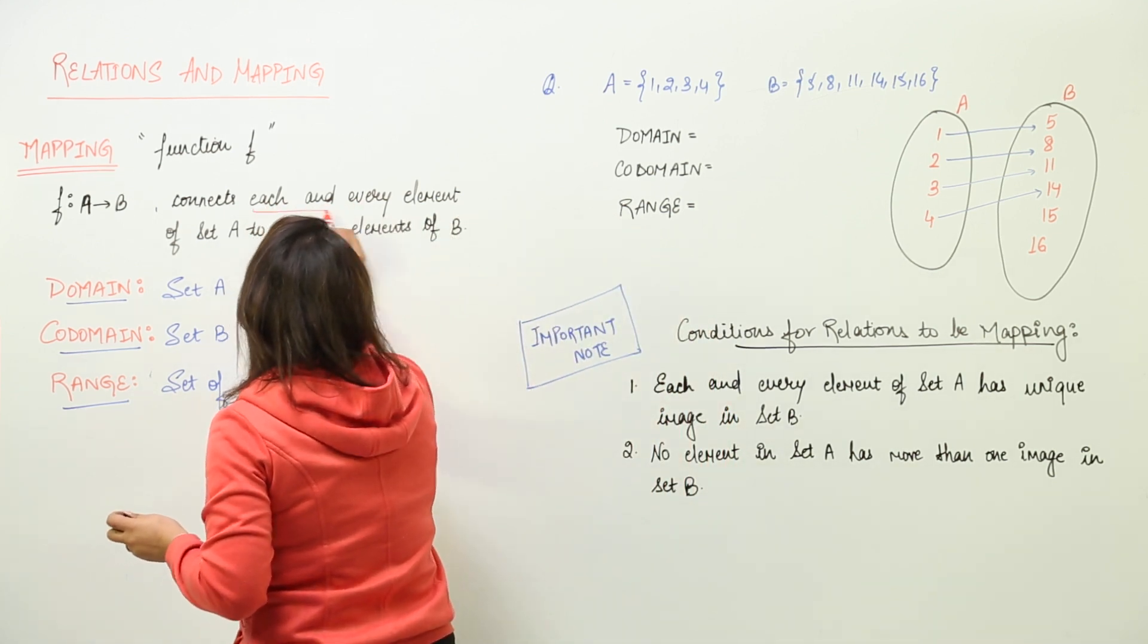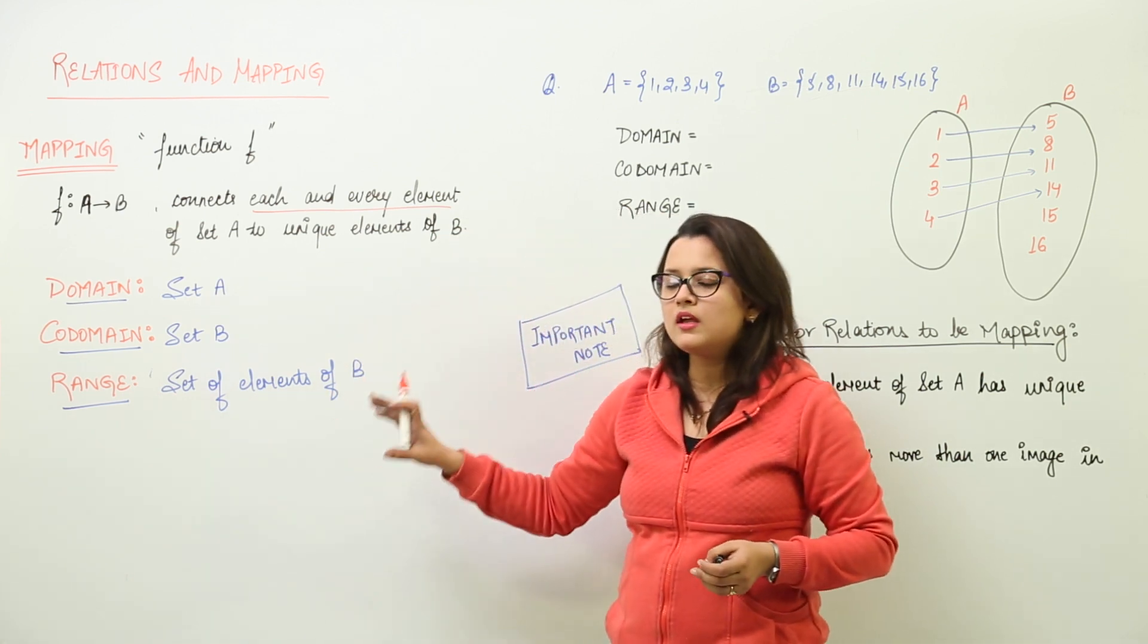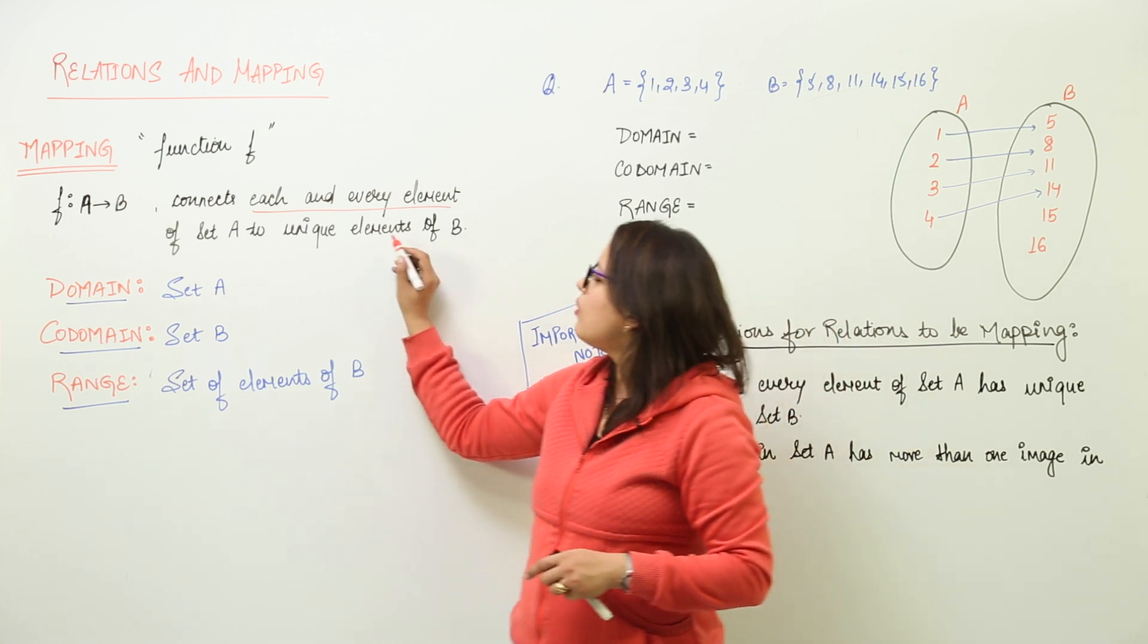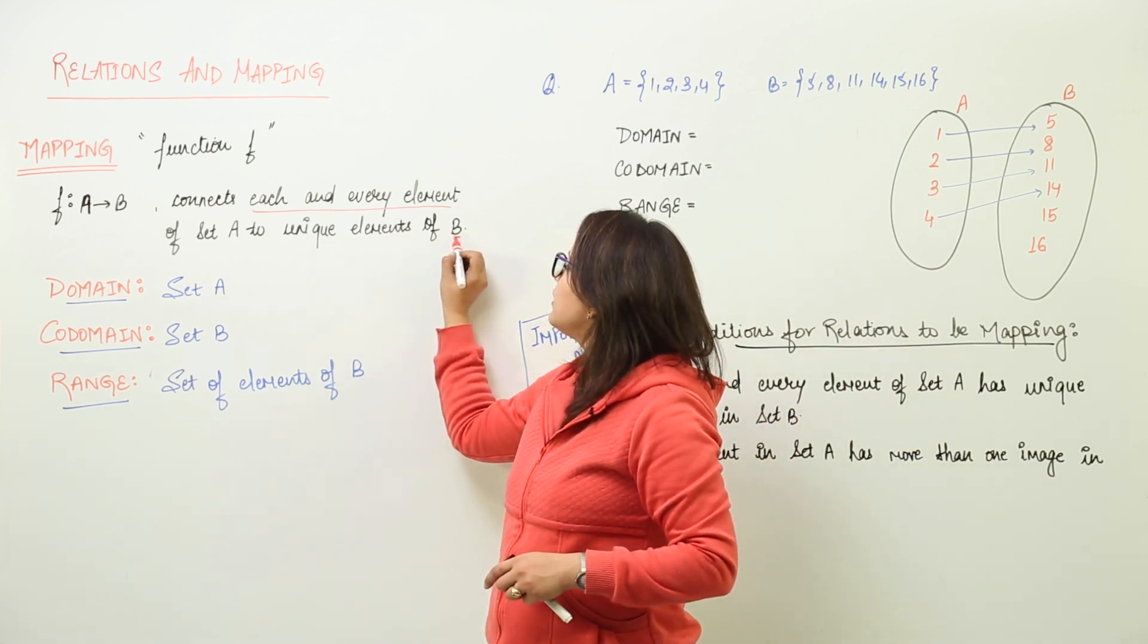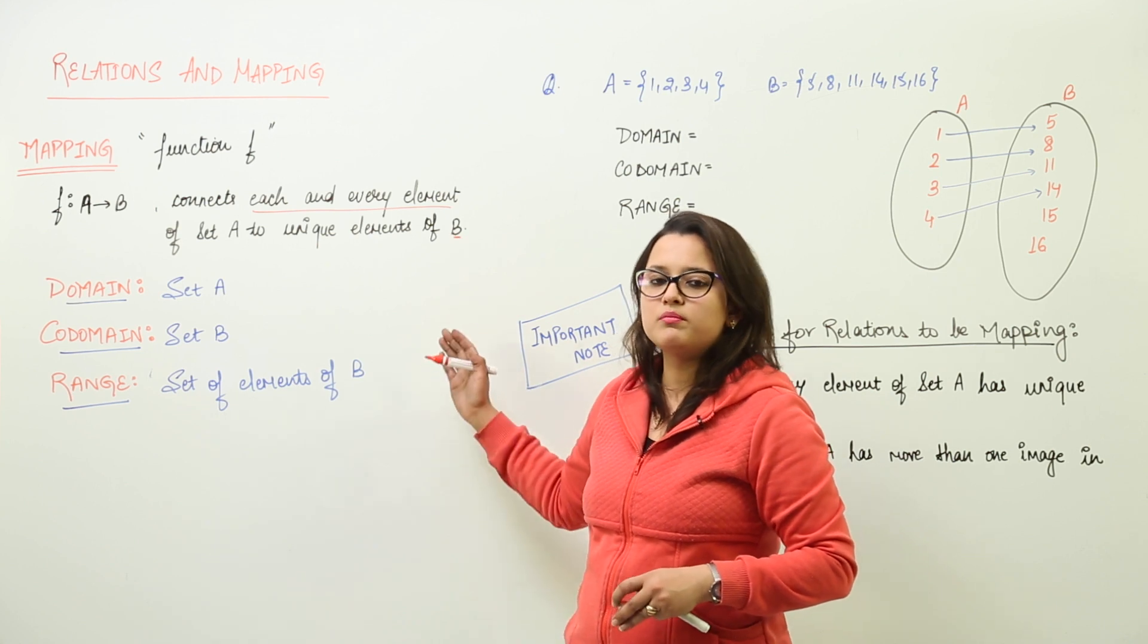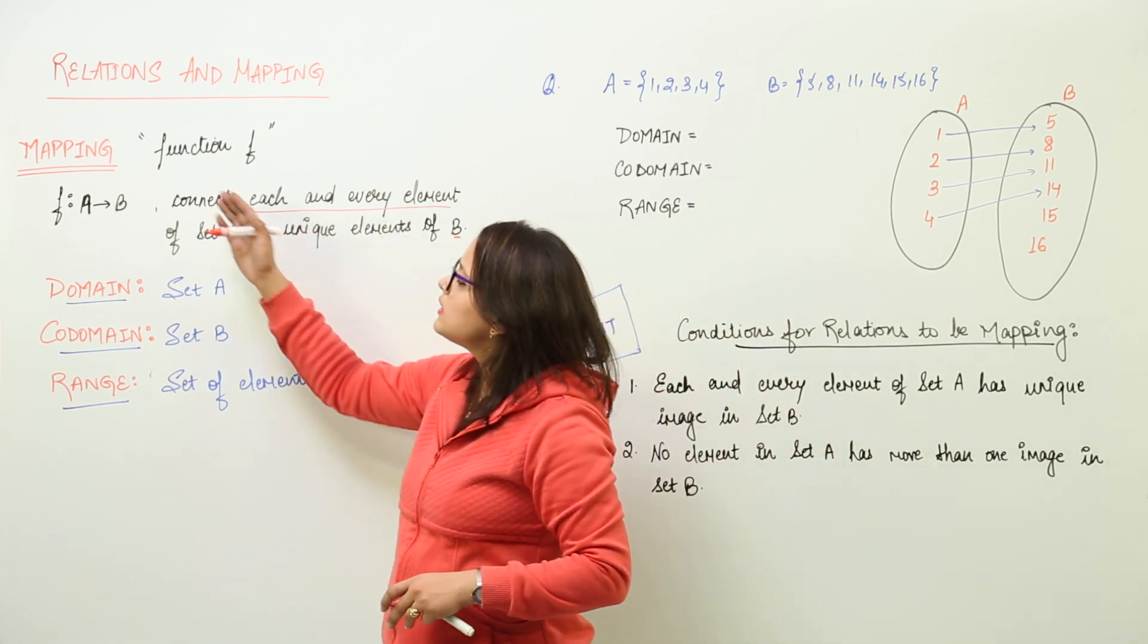Pay attention, each and every element of set A will be in some or the other way connection to all the elements of B, to the unique elements means to the different elements of B. That will represent the mapping.